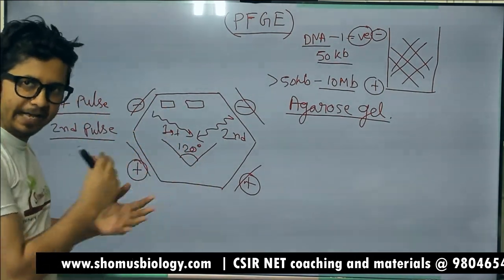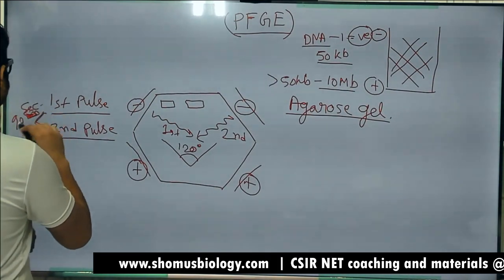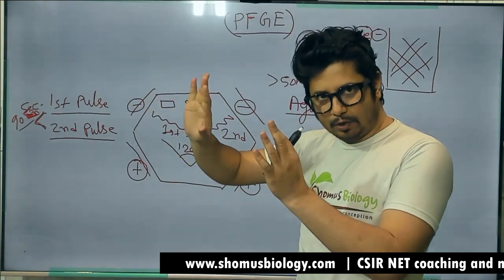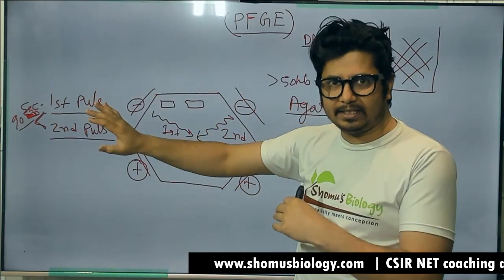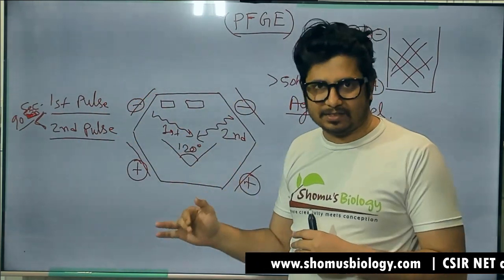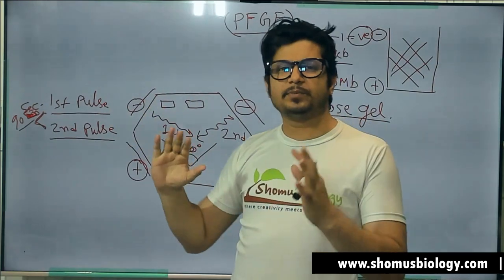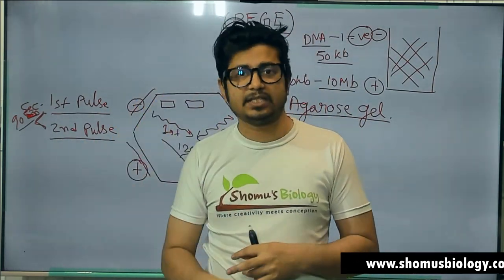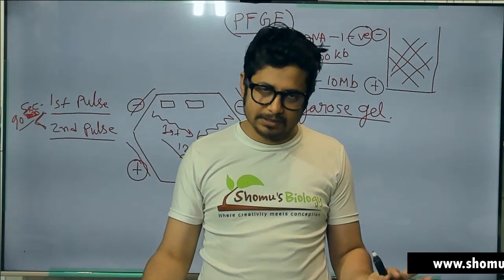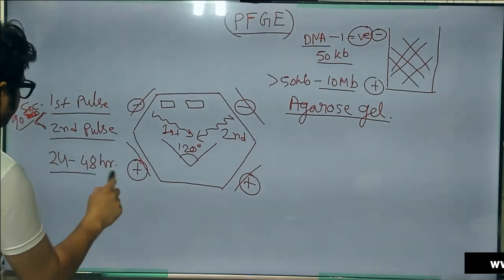The time difference between the first and second pulse is, for example, 90 seconds. The first pulse continues for 90 seconds, then the second pulse for 90 seconds, then a third pulse for 90 seconds — so every 90 seconds the direction changes by a 120-degree angle. This process continues for 24 hours, sometimes 36 or 48 hours, depending upon the resolution required. The 24 to 48 hour duration is very important.